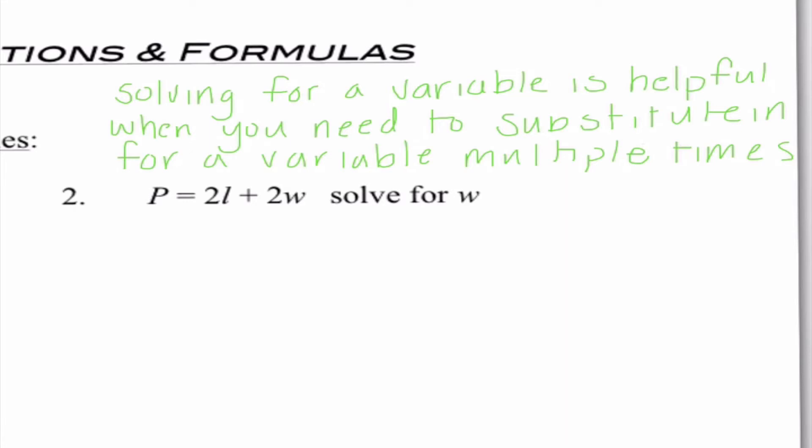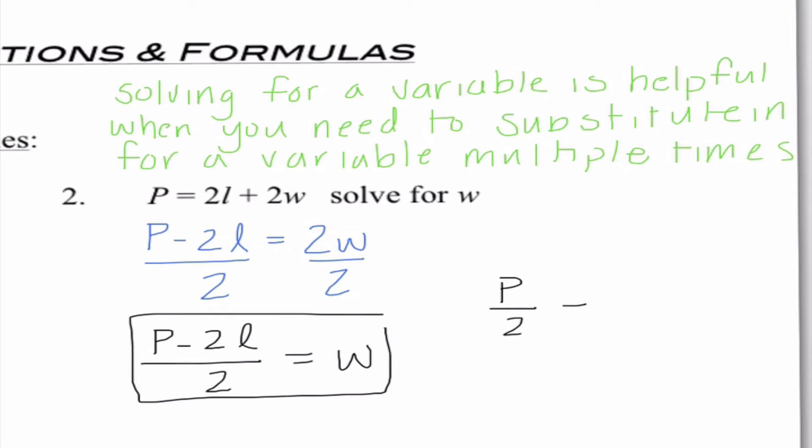So let's actually go into number 2 here. For number 2, we want to get W by itself. So we need to start by getting rid of that 2L. So I'm going to subtract 2L from both sides. Then, to get W by itself, we're going to divide everything by 2. So if you gave me an answer of P minus 2L divided by 2 equals W, that would be correct. The other way we could do this is to split it up and do P divided by 2 minus, when I do 2L divided by 2, they actually cancel out. So I would just be left with L equals W. Either of these answers would be correct.